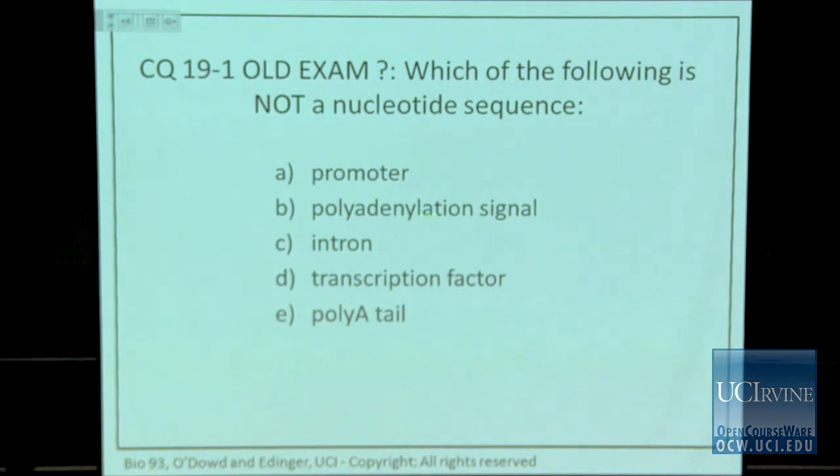So where is the polyadenylation signal? In what molecule? mRNA. So is something in the mRNA going to be made out of nucleotides? Yes. So the polyadenylation signal is a nucleotide sequence, and this is an old exam question from this class.